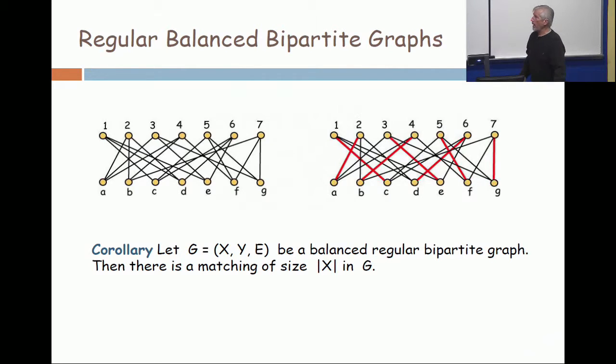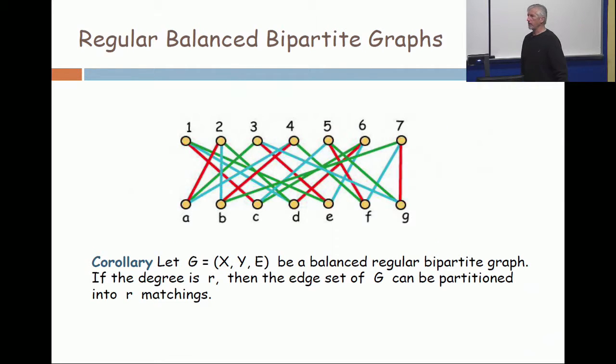Now, look at the graph on the right carefully and take away the red edges. What's left? A regular graph that's smaller. So that one has a matching too. Et cetera. And that means that a regular balanced bipartite graph has a complete factorization into matchings.